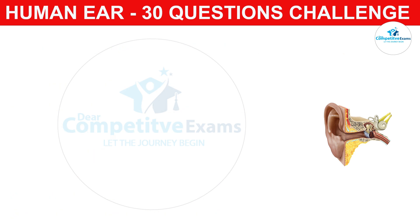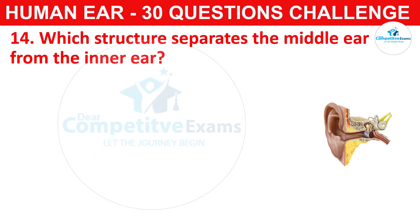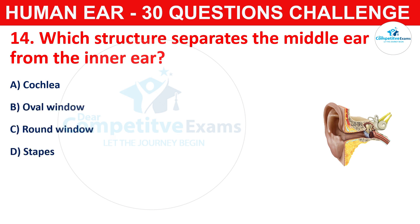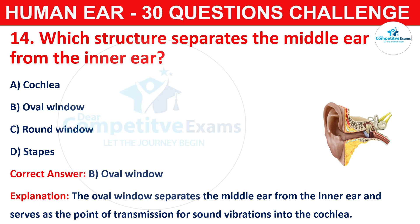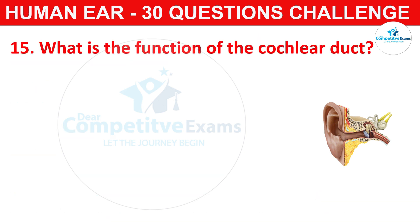Question number fourteen: which structure separates the middle ear from the inner ear? Your options are cochlea, oval window, round window, or stapes. The correct answer is B, that is oval window. The oval window separates the middle ear from the inner ear and serves as the point of transmission for sound vibrations into the cochlea.